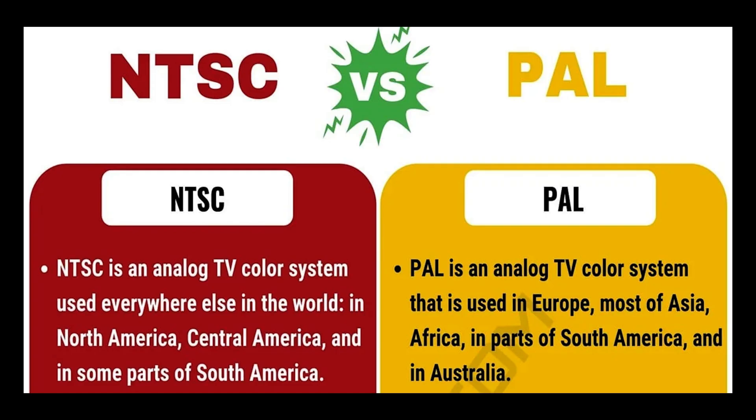In the 1950s, 30 frames a second became the norm for analog TV broadcasts in North America, Japan, and South America. At the same time, Europe and Africa adopted 25 frames a second due to different video frame rates based on hertz power — the NTSC and PAL standards, respectively.